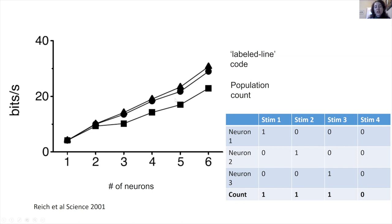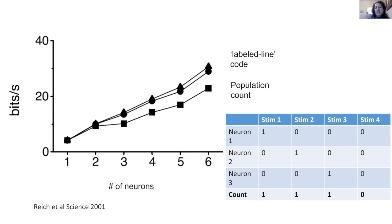The question raised in this paper was: the labeled line code conveys more information, but how can it be implemented in the brain? It would be a very complicated code to read out. I will be driving towards an intermediate solution that is not so complicated but can nevertheless account for these results.